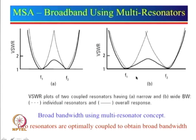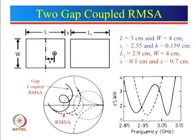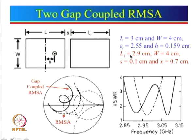There are many ways we can use the concept of the multi-resonator. The first configuration we are going to look at is a gap-coupled rectangular microstrip antenna. What we have here is only one patch is fed, and this patch dimension is the same as earlier: L equal to 3 cm, W equal to 4 cm. Substrate parameters are also the same. We have put another patch of length L1, with the same width.